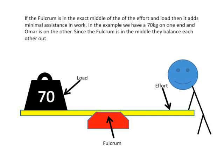If the fulcrum is in the exact middle of the effort and load, then it adds minimal assistance to work. For example, if we have a 70kg on one end and Omar on the other, since the fulcrum is in the middle, they balance each other out.